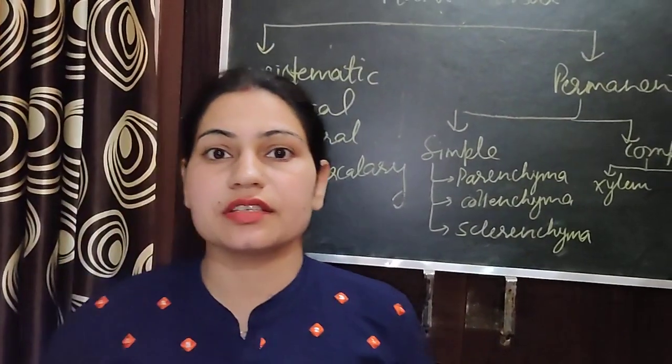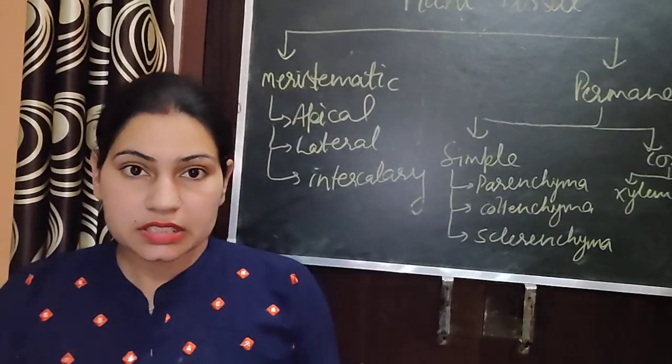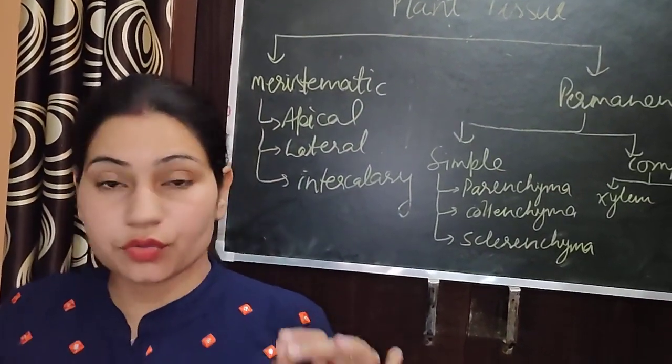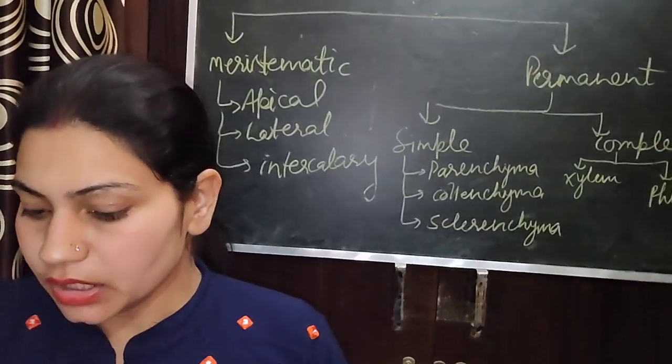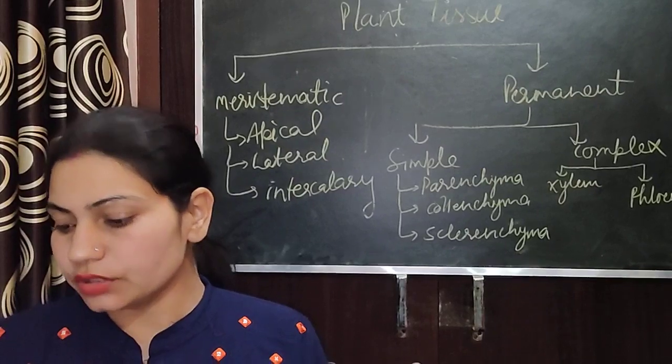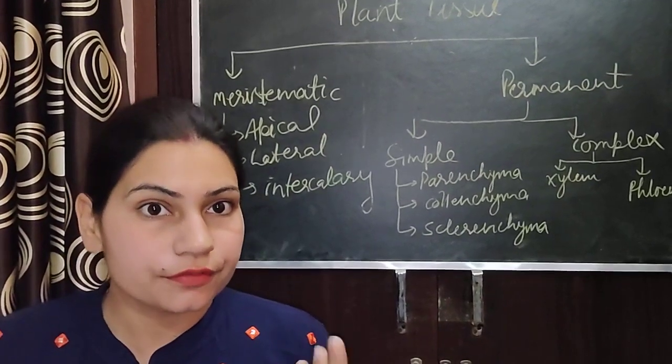Now, features of meristematic tissue. First, the cell wall is thin and elastic. Second, they are rounded or oval in shape. Third, intercellular space is absent. And fourth, they have the ability of division.